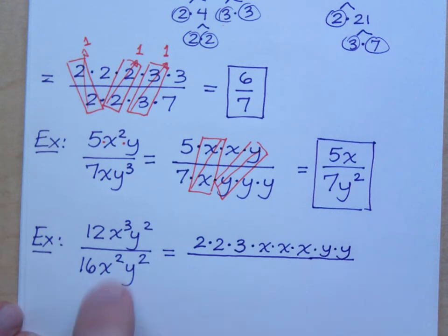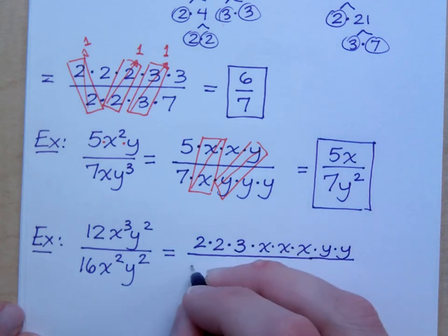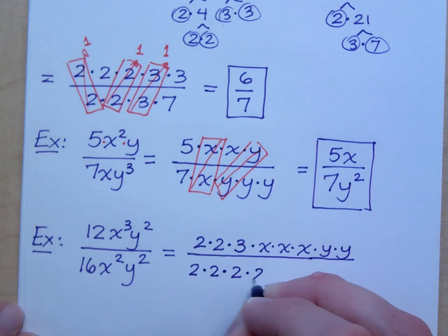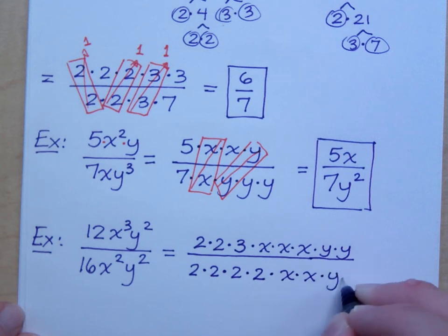Isn't that what x to the third means? You have 1, 2, 3 factors of x. Okay. 16. How do you rewrite 16? I heard 2 times 2 times 2. That gives me 8. Times another factor of 2. Right? You have to have 4 factors of 2 there. I have 2 factors of x and I have 2 factors of y.